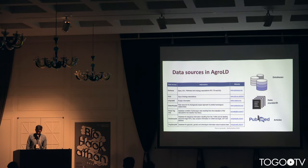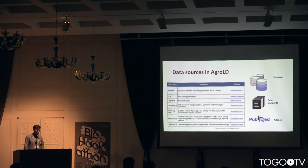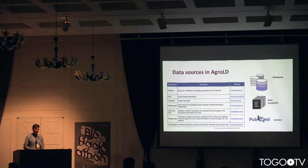We use public datasets to integrate data from different sources and databases, using data standards such as GFF, GVCF, or HapMap, among many standards. We also extract some information from PubMed abstracts. We integrate data from sources such as Gramene, genes, QTL, pathway, and ontology associations, Gene Ontology associations, the GOA database, and UniProt information.